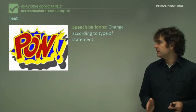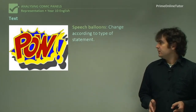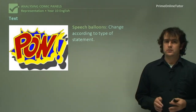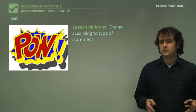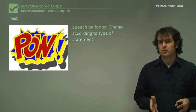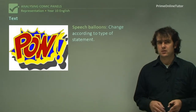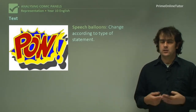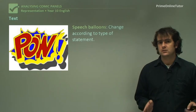The last thing we're going to look at is text. So, very simply, to start with we've got speech balloons — and they change according to the type of statement. You might see something like a lightning bolt if it's a really strong action statement, you might see a thought bubble if it's just a thought, a normal speech bubble if it's just a normal line, all those sorts of things.